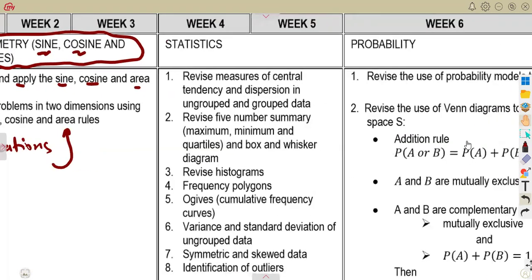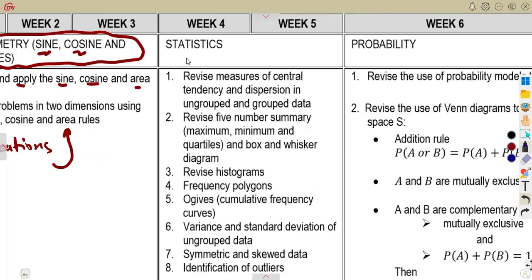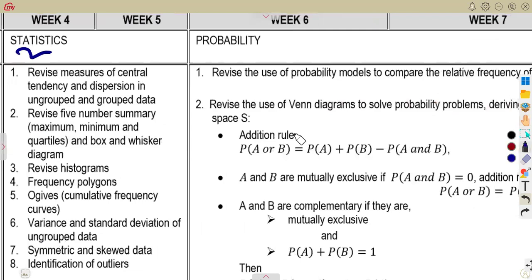Then the other part that you are also going to need is to work with a part of the statistics, which is also important in this term, that is to revise the measures of central tendency and dispersion in ungrouped and grouped data, and also to revise the five number summary, that is the maximum, minimum, and the quartiles.